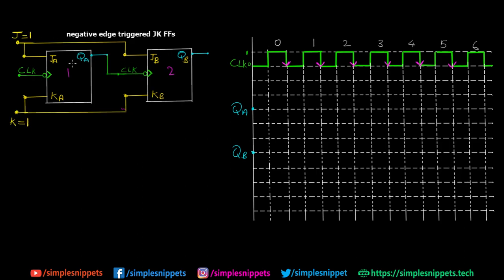The connections are now made. Output QA is fed as the clock input to the second flip-flop, making this an asynchronous configuration — each flip-flop has its own clock, where the second flip-flop's clock is the output of the first. J and K are both set to 1, which is common for both flip-flops. This entire setup is now a 2-bit asynchronous counter.